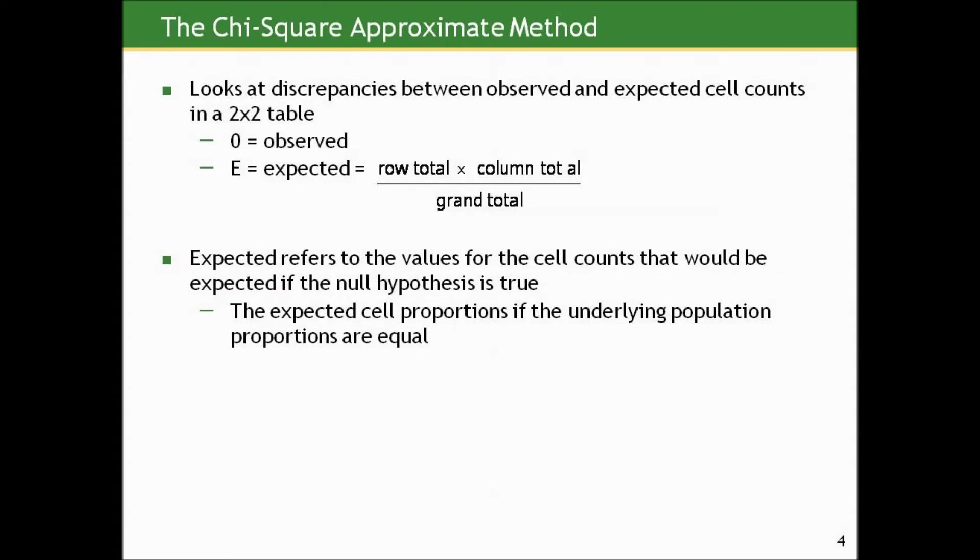So how does this chi-squared approximate method work? Well, like any other testing situation we've done, it looks at what we observe between what we'd expect if the null were true. And it does it via the eyes of the two-by-two table. And what we can do, actually, in the two-by-two table context is for each of our four cells, we can compute a corresponding expected cell count if the null of equality of proportions were true, to compare to the observed cell count we got in our study.